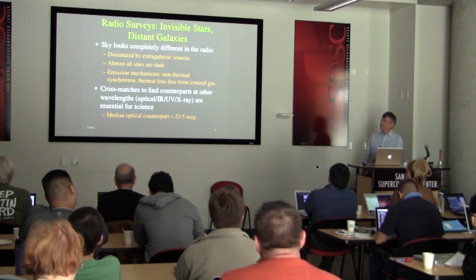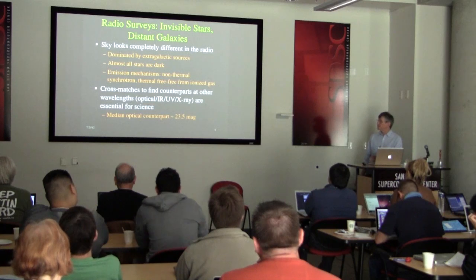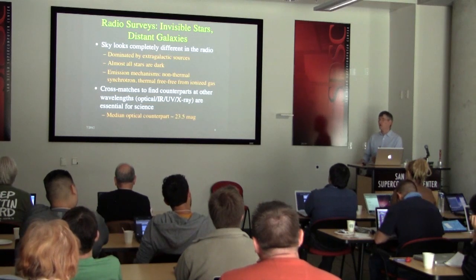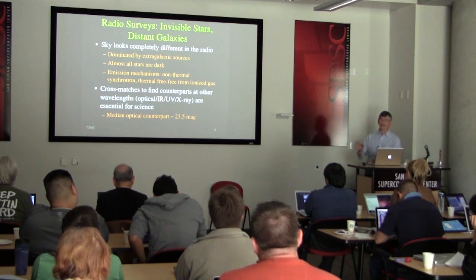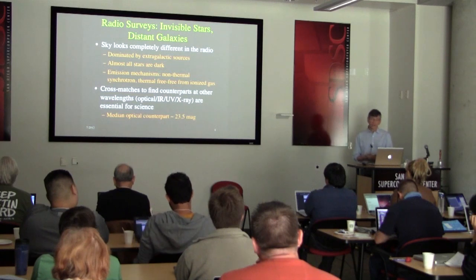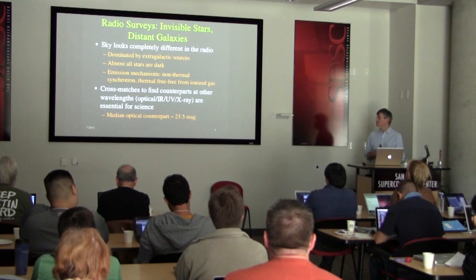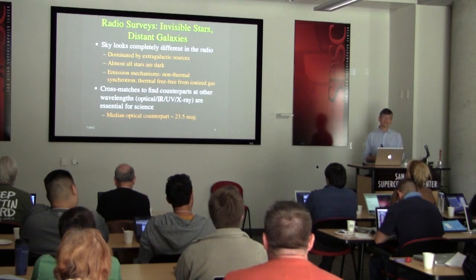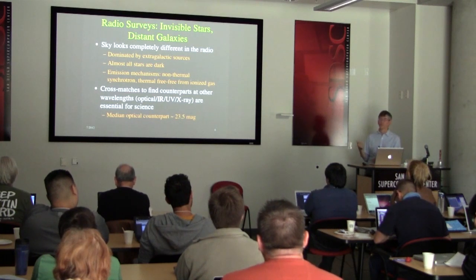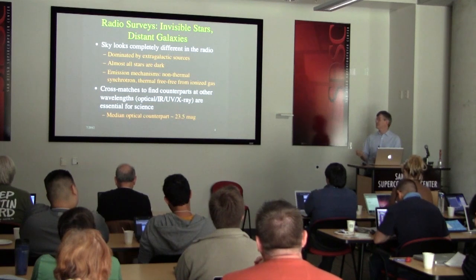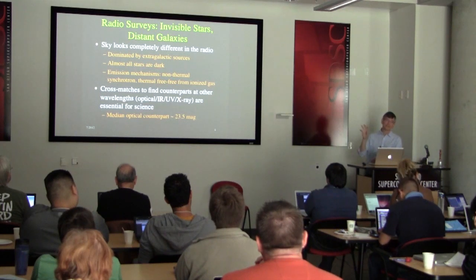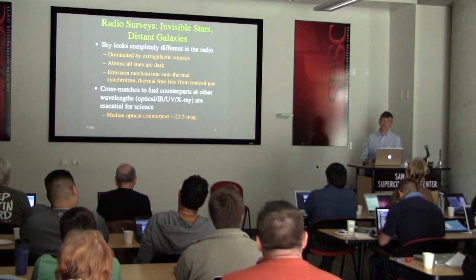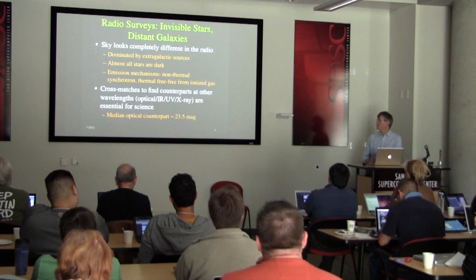The emission mechanisms producing radio emission are quite different from the optical. Optical radiation comes from thermal hot objects; in the radio, the dominant mechanism is non-thermal synchrotron emission — electrons accelerated to relativistic energies spiraling in magnetic fields, producing highly beamed radiation. You also see thermal free-free bremsstrahlung emission from ionized gas.